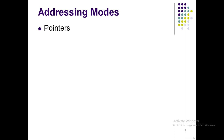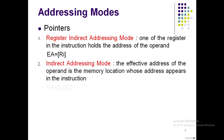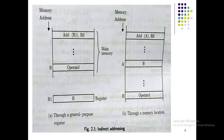Moving ahead, we covered indirect addressing mode, which is very different. I gave a live analogy which you can easily correlate with addressing modes — please view the third and fourth lectures. In indirect addressing mode, we first saw it using pointers, and also how it is done with a register as well as with a memory address.